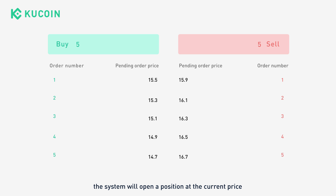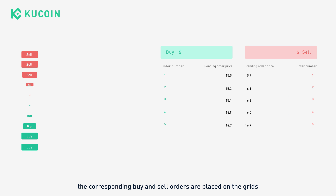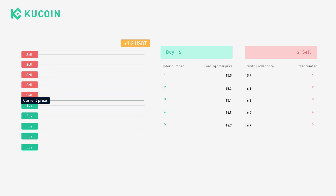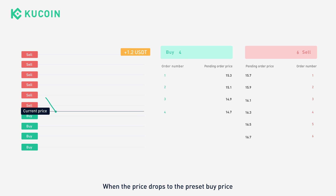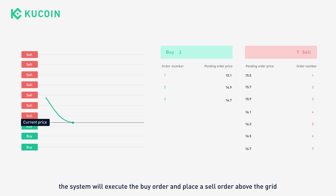At the same time, the corresponding buy and sell orders are placed on the grid. When the price drops to the preset buy price, the system will execute the buy order and place a sell order above the grid.